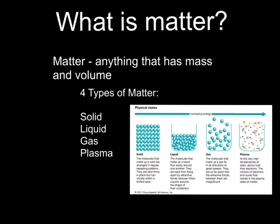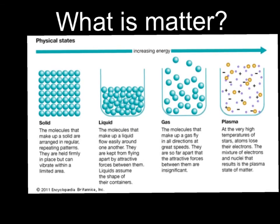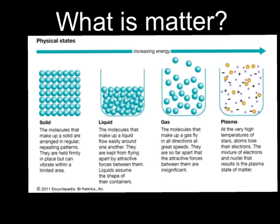As you read in Chapter 3, matter is anything that has mass and volume. You also read about three types of matter. Your book ignores the fourth type of matter, which is plasma. We know about solids, liquids, and gases. Let's take a look — I'm going to zoom this in for you. Let's look at these four states of matter. Solids are molecules that are arranged in a regular repeating pattern.